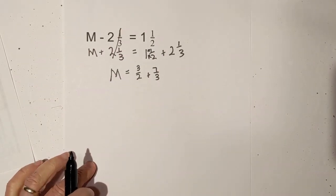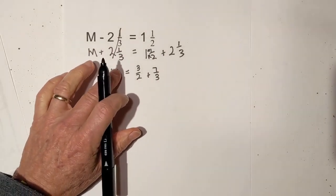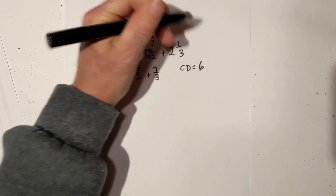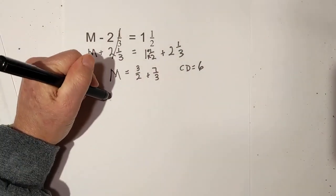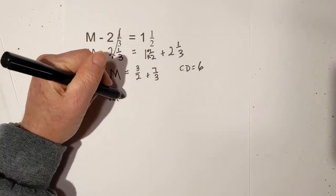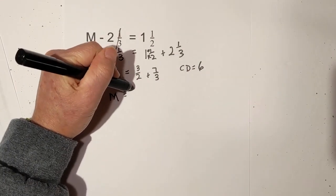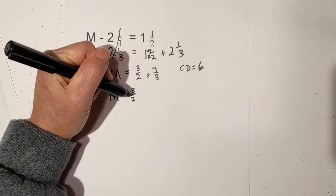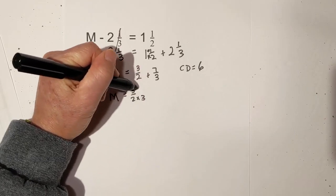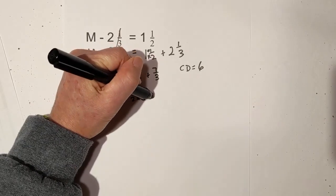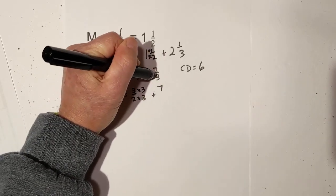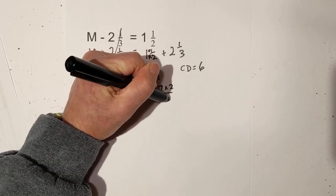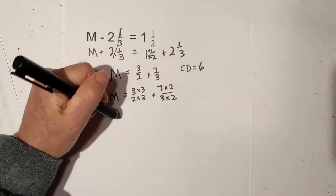Now we need to find a common denominator, which for 2 and 3 is 6. Let's rewrite this. We have 3 over 2. 2 goes into 6 three times, so we'll multiply both of these times 3. Plus, this 3 goes into 6 two times, so we'll multiply both of these times 2.